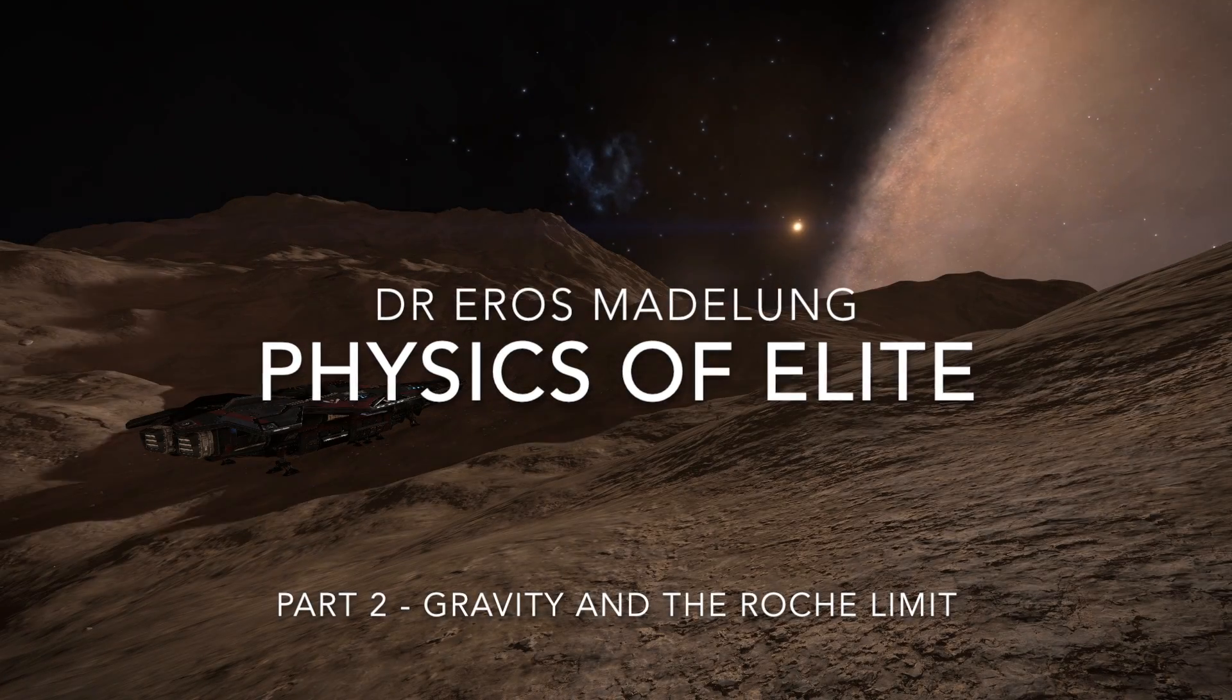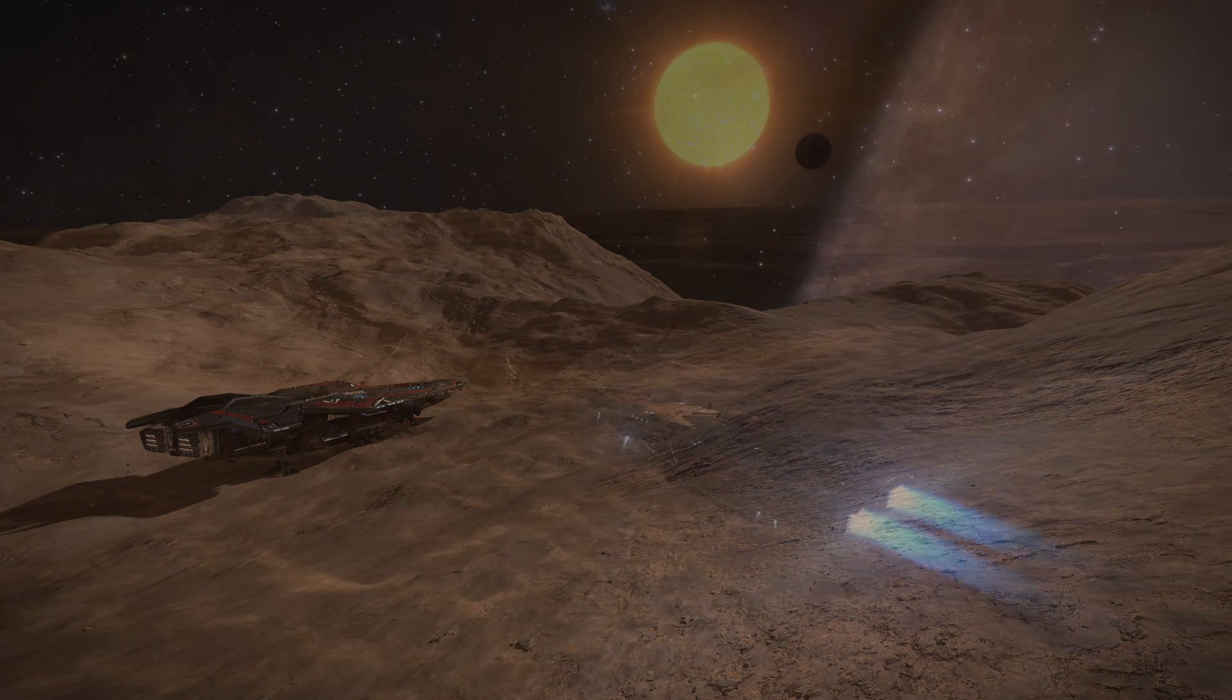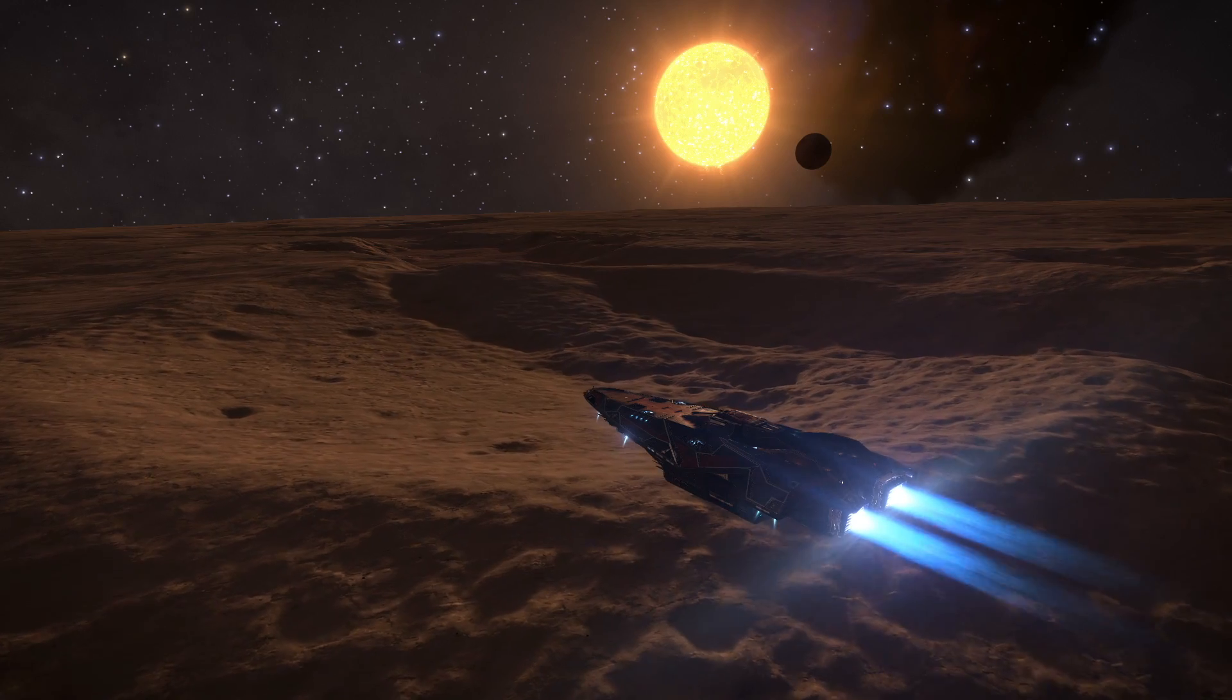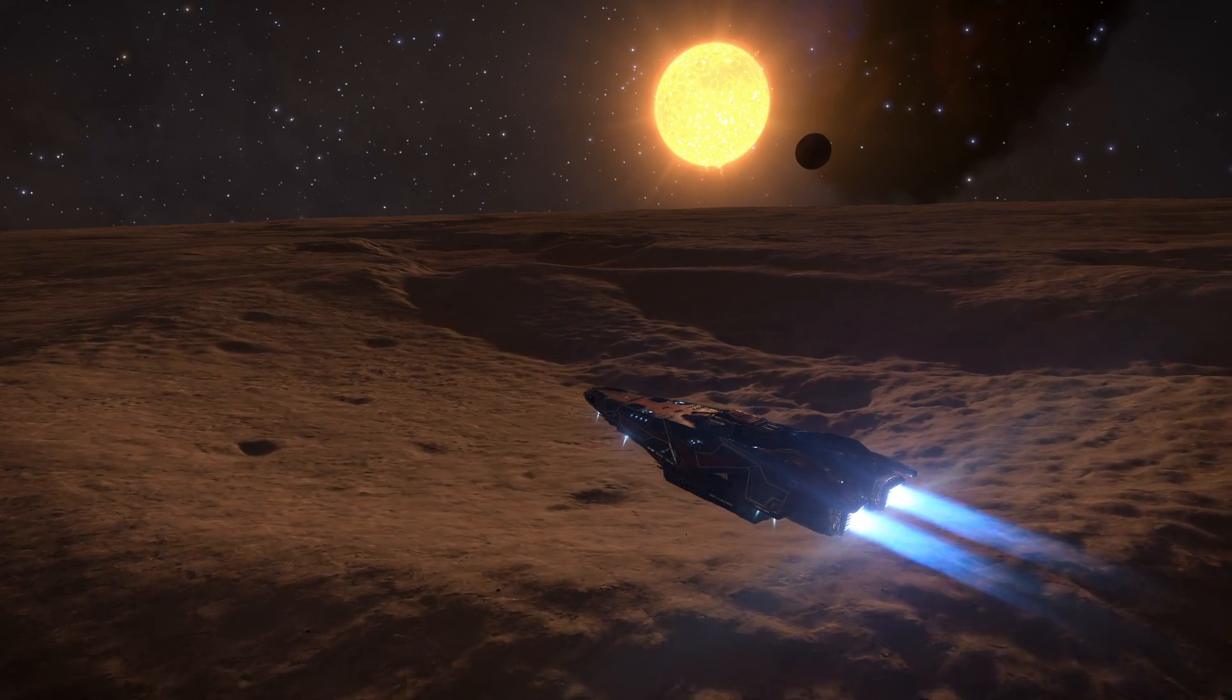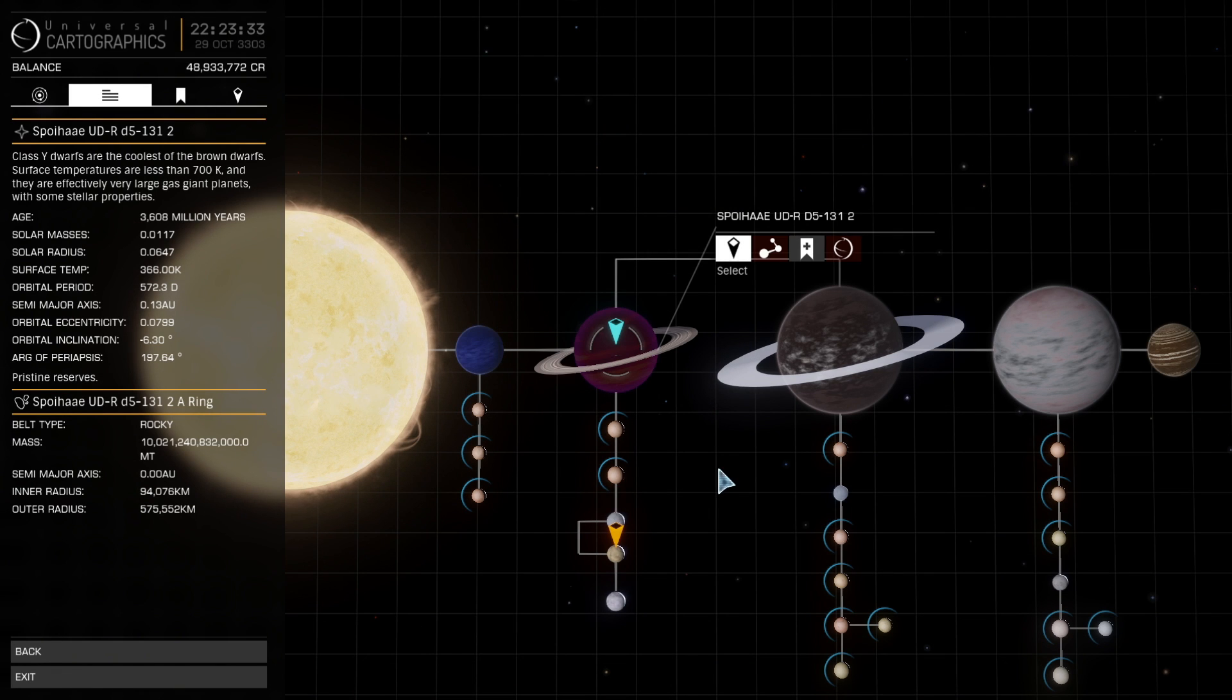Hello, and welcome to another Science of Elite video. Today I will be speaking about gravity and how it shapes the environment inside stellar systems. In-game, we spend a lot of time flying between stars and planets. Our planetary system contains a lot of information, so from a purely academic standpoint, what does most of it mean?